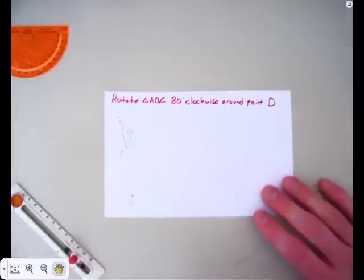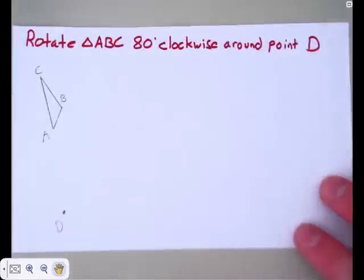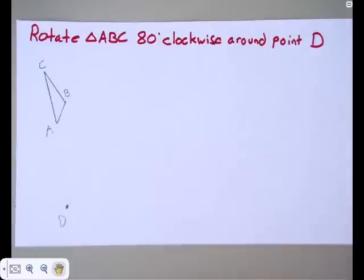So I'm going to start by rotating triangle ABC 80 degrees clockwise around a point D. That's this point down here. So we know which direction we're rotating, we know how much we're rotating, and we know what we're rotating around.